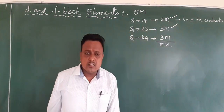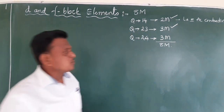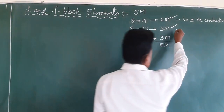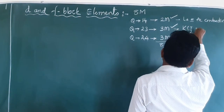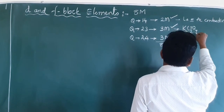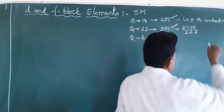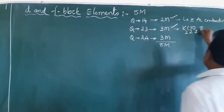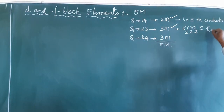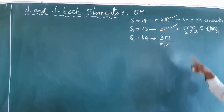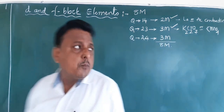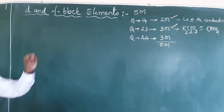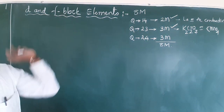Question number 23 is also already known — there are two manufacturing processes of D block elements: one is K2Cr2O7 (potassium dichromate) and the other is KMnO4 (potassium permanganate). Either the manufacture of potassium dichromate or the manufacture of potassium permanganate will be the question.